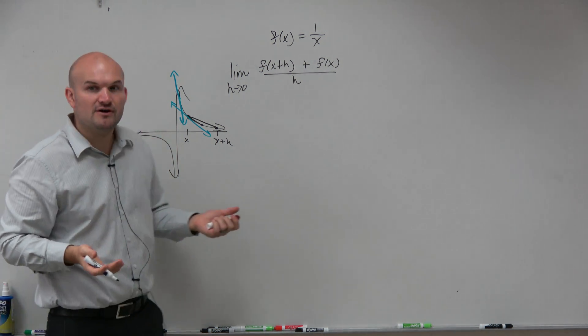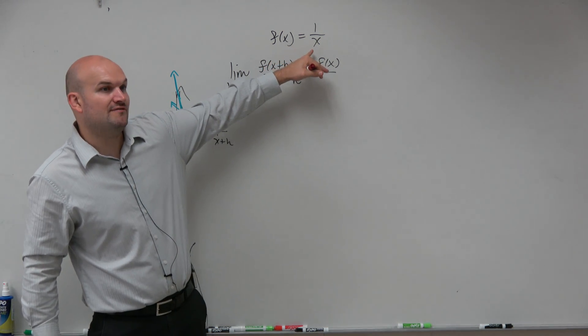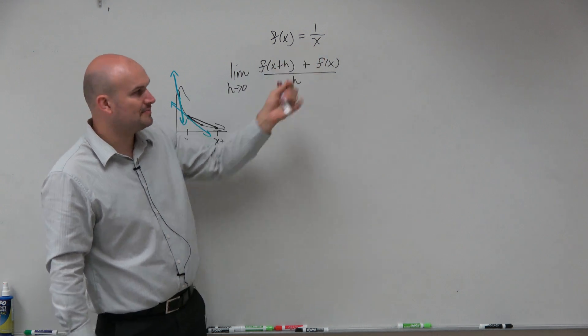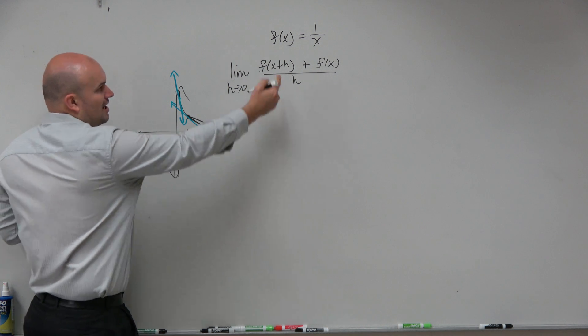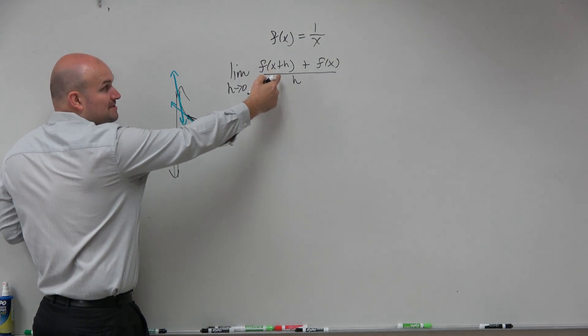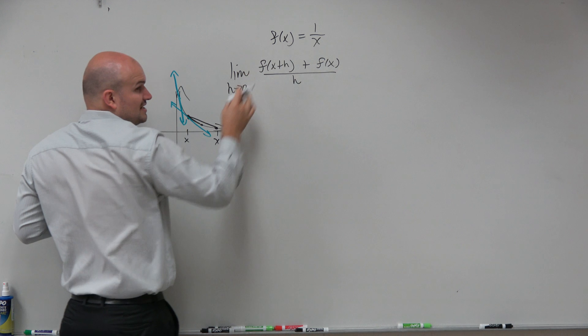So it doesn't matter what the function is. In this case, we have the function f of x equals 1 over x. So all we're going to do when applying this difference quotient is say, all right, what is x plus h? So what happens when I plug x plus h in for x?